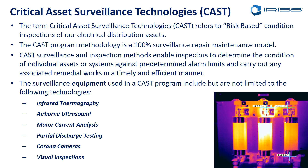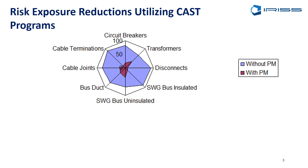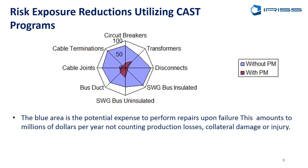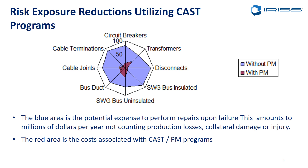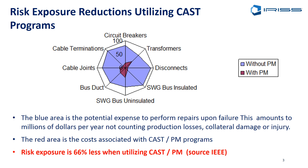These physical inspections are completed on our electrical assets on a daily basis. This chart shows the results of a risk exposure versus reduction study completed by the IEEE. The blue area represents the potential expense to perform repairs upon failure — running to failure costs millions of dollars a year, not counting production losses, collateral equipment damage, or injury to personnel. The red area shows the costs associated with a CAST or planned maintenance program, and what we're showing here is a 66% risk reduction when utilizing a CAST and planned maintenance program versus a run-to-failure or reactive maintenance methodology.